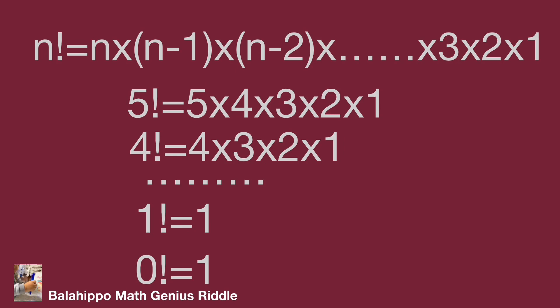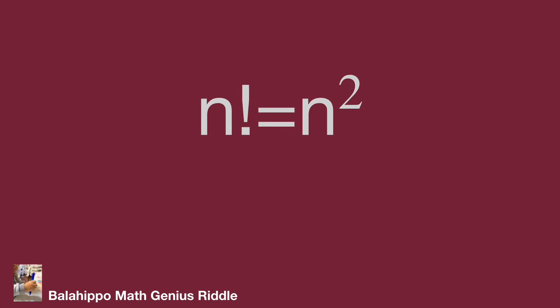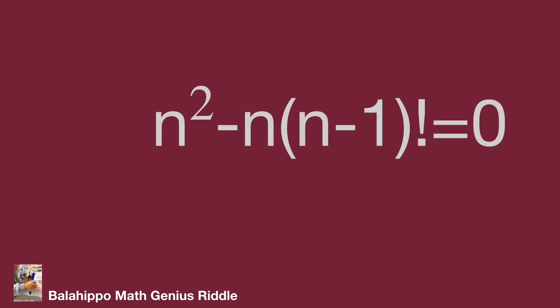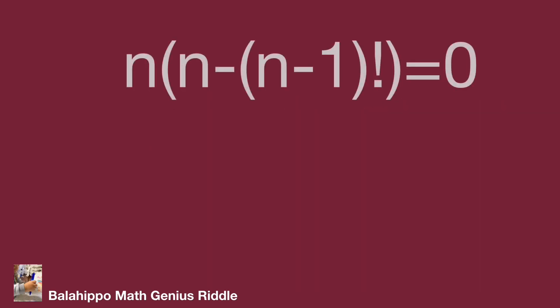Also note: 1 factorial equals 1, and 0 factorial equals 1. Given n factorial equal to n squared, we can rewrite n factorial as n times (n minus 1) factorial equal to n squared. Rearranging: n squared minus n times (n minus 1) factorial equal to 0.